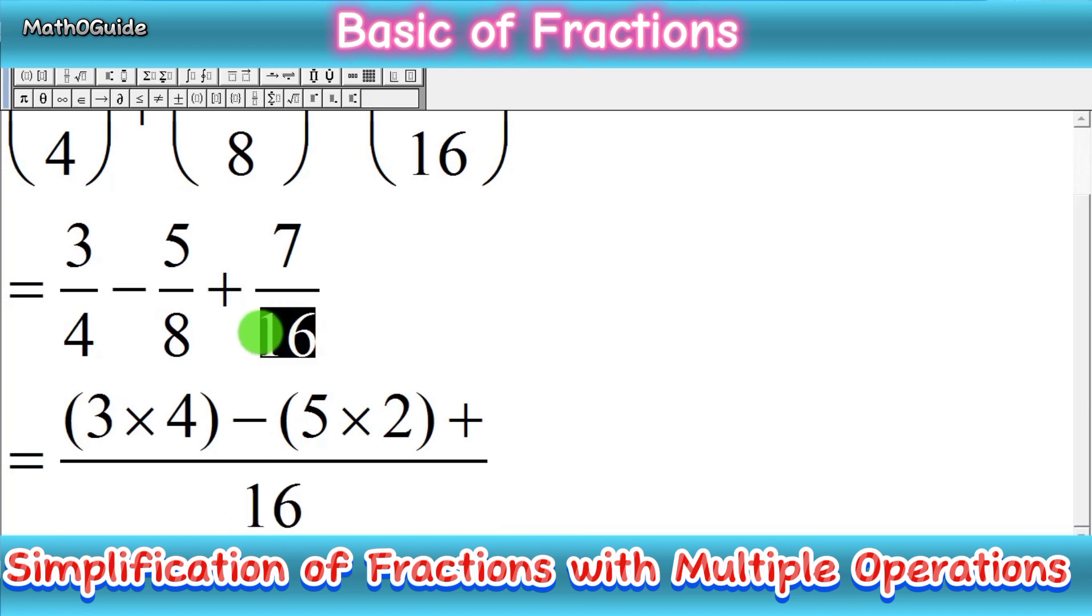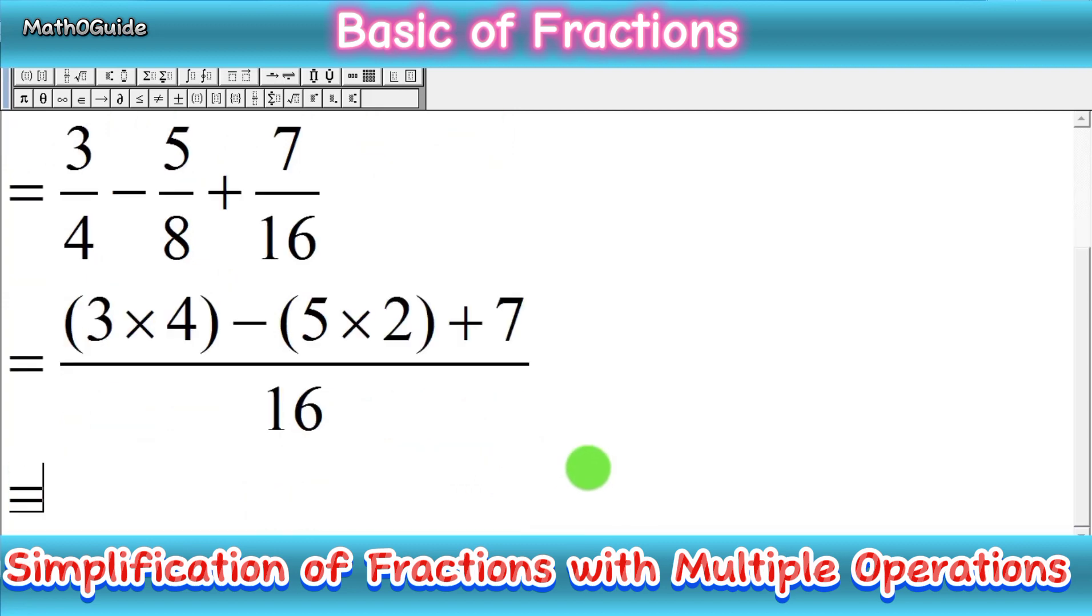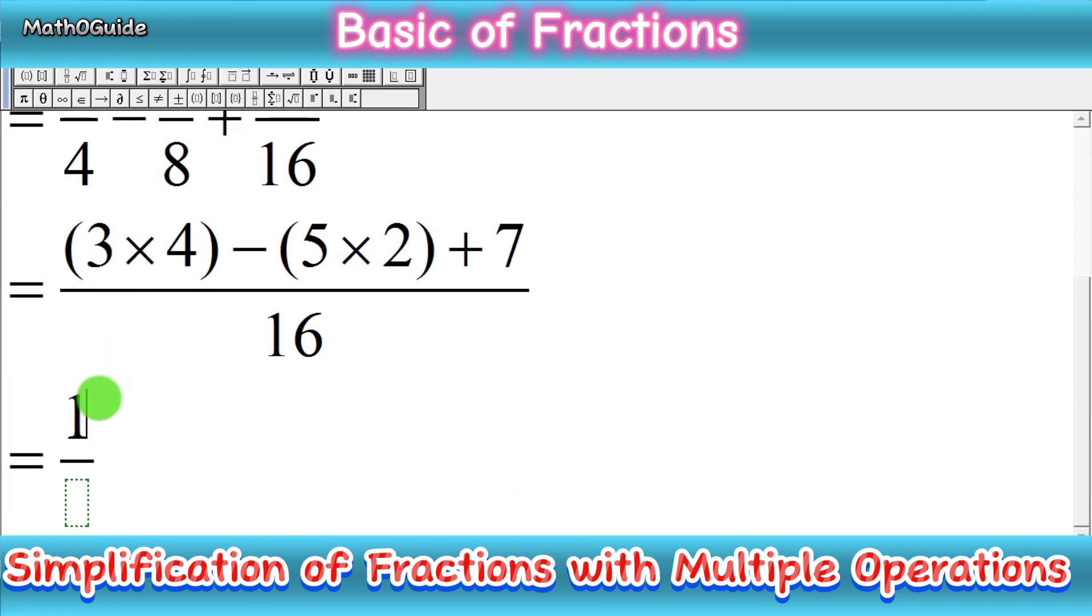Now we can simplify easily. We have (3 × 4) - (5 × 2) + 7 all over 16. That's 12 - 10 + 7 over 16.